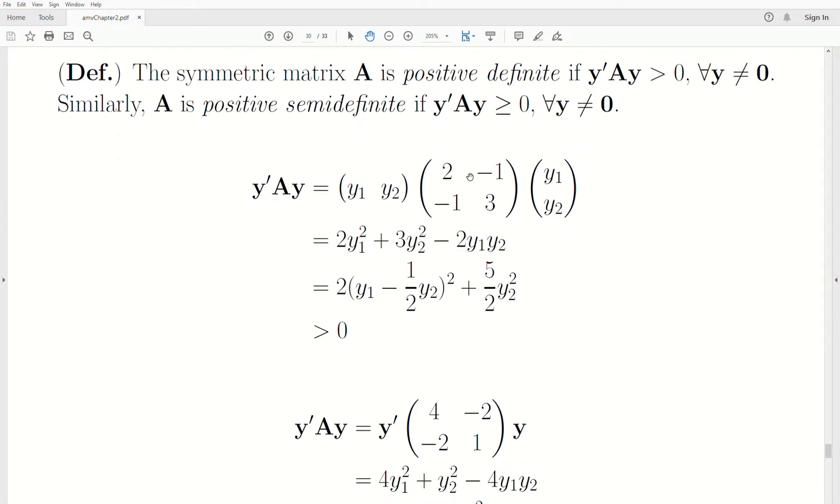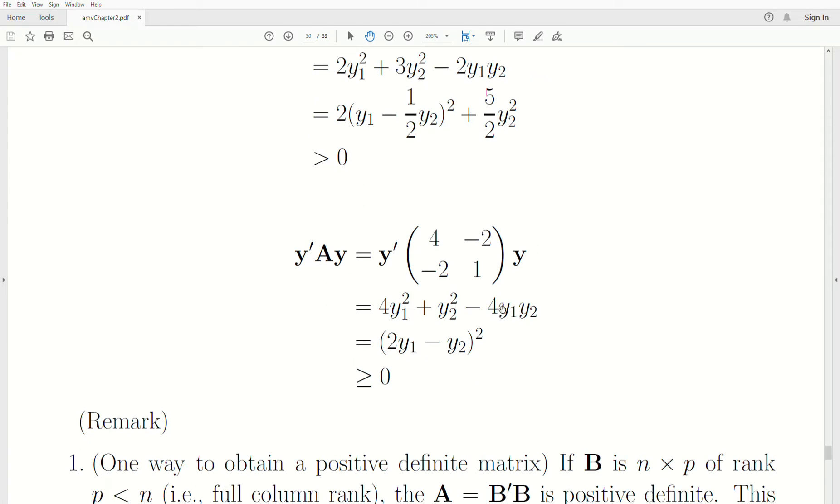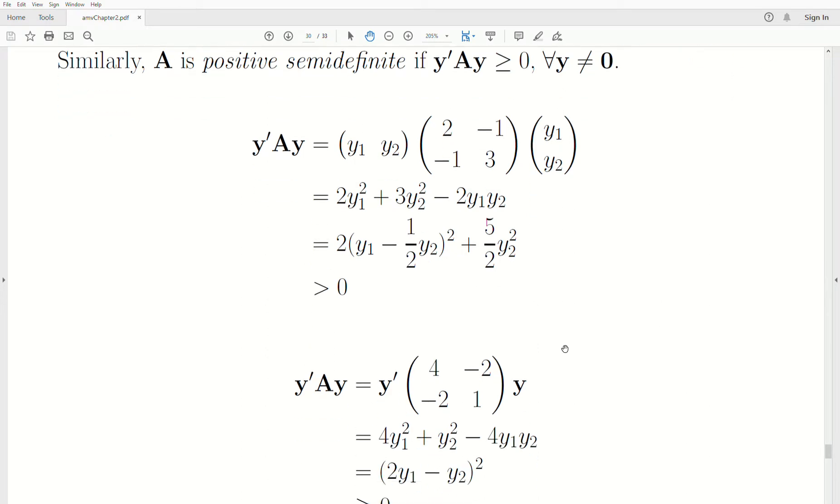Now here's an example where the matrix A, look at it, it's symmetric. When you do this multiplication, it boils down to this number here. But if y2 is equal to 2 times y1, this could be 0. But otherwise, when you square something, it's non-negative. So this is always greater than or equal to 0. So this matrix is positive semi-definite.